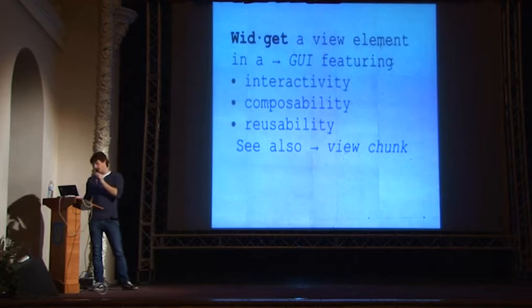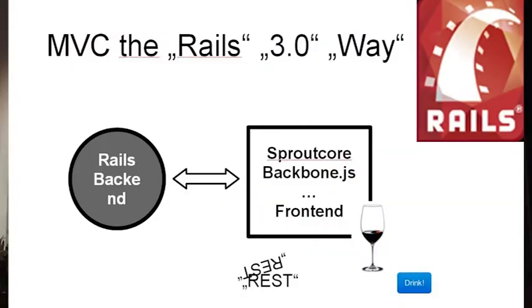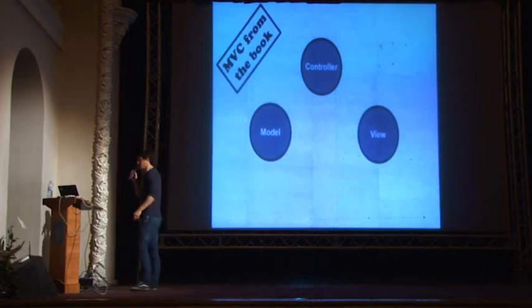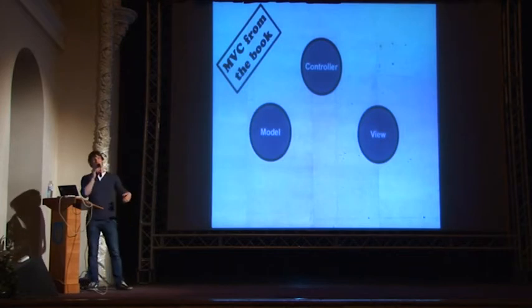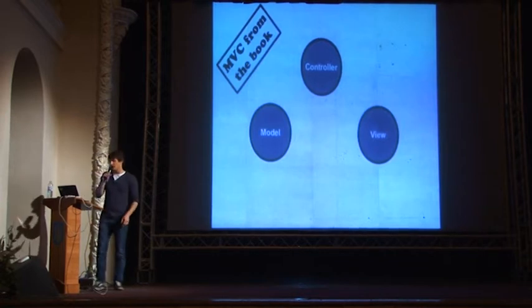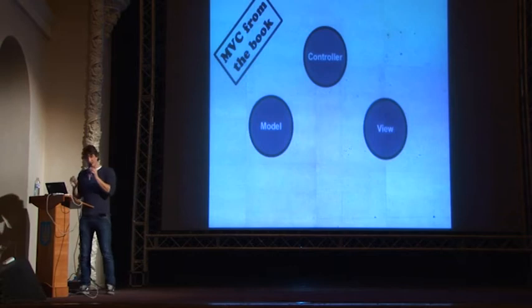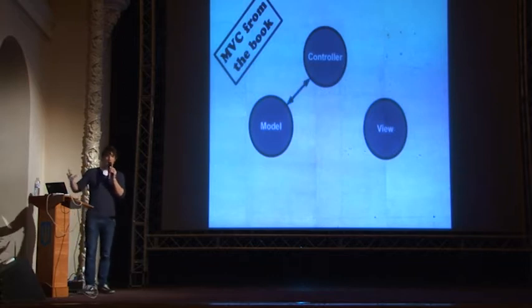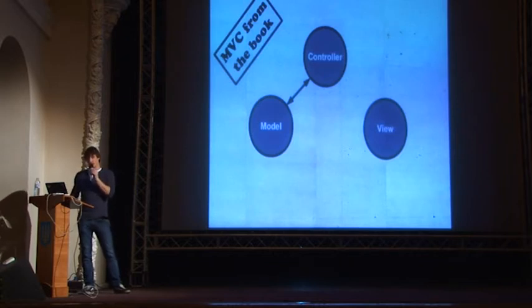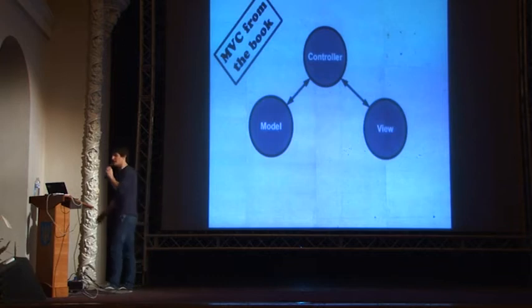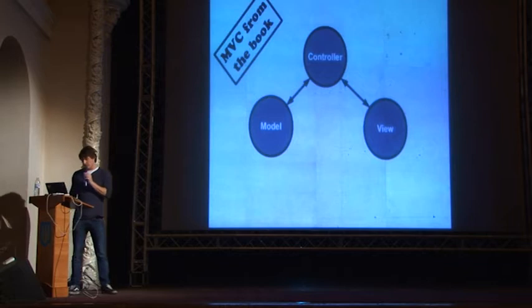We also call it a view chunk since it's a part of my page. This is problematic in Rails. Rails is an MVC framework — it has a good model layer, a big front controller intercepting requests, and a template engine. Real MVC works like the following: we have a controller, a model, and a view. The model tells the controller if it updates, and the controller tells the model to update some value. The view tells the controller about user gestures, and the controller processes this gesture and updates the view.